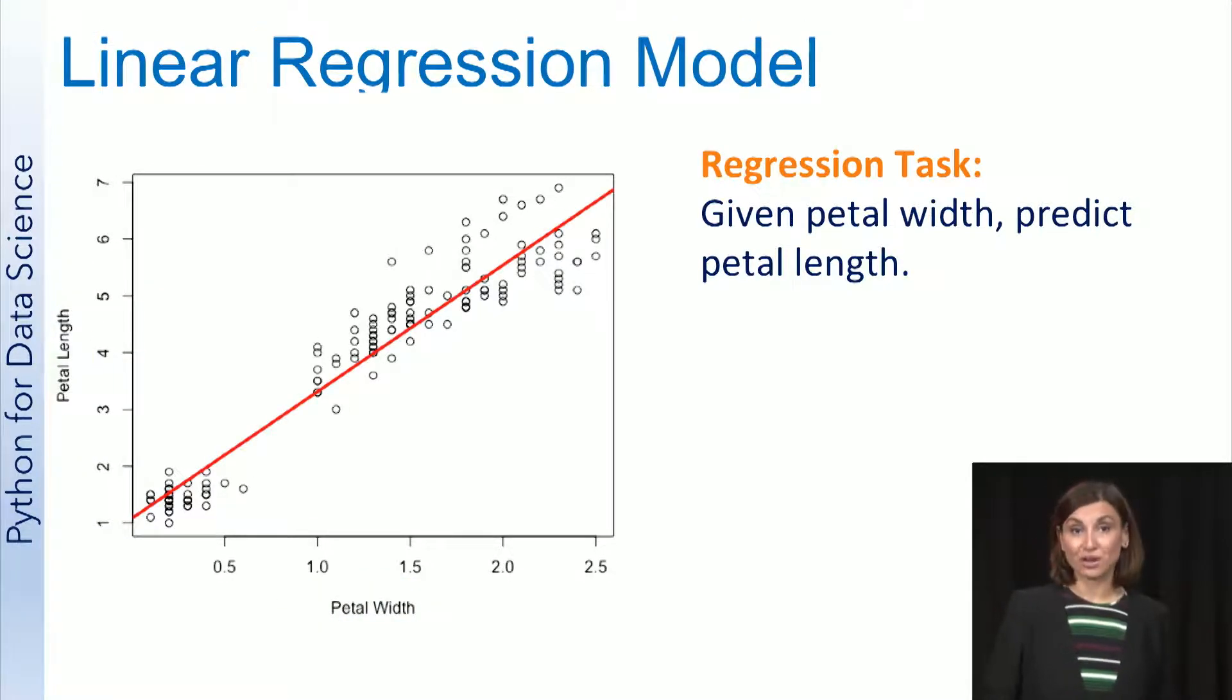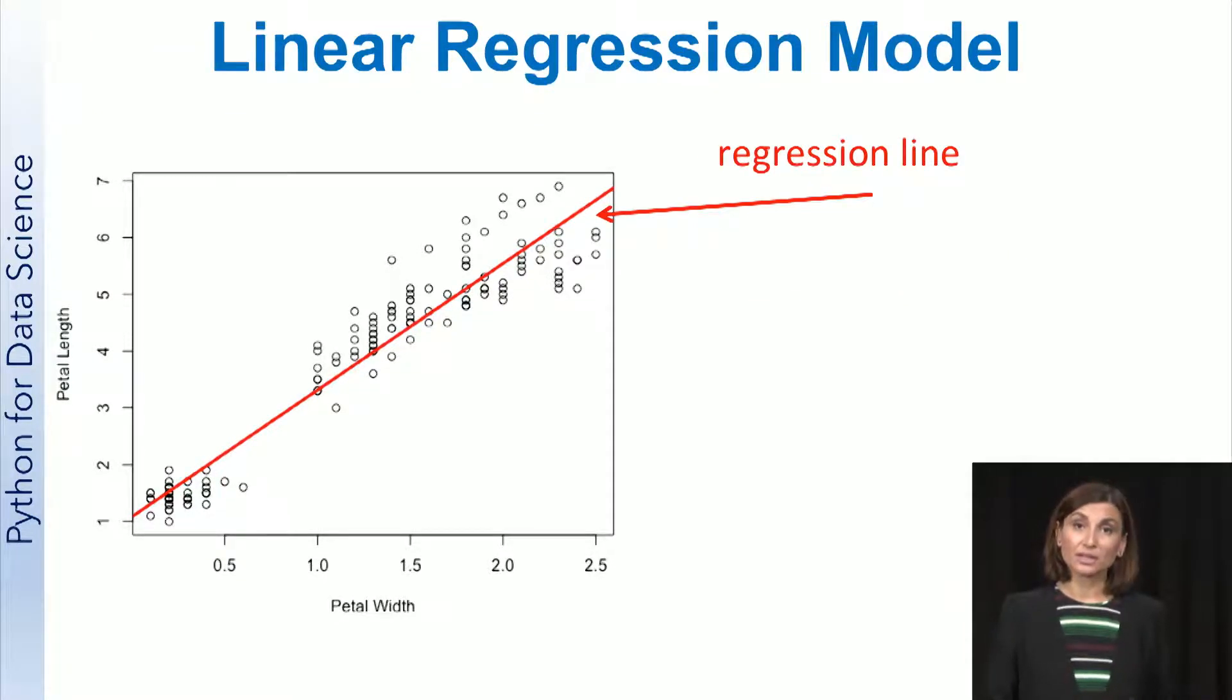We can build a linear regression model to capture this linear relationship between the input petal width and the output petal length. The linear relationship for these samples is shown as the red line on the plot. From this example, we see that linear regression works by finding the best fitting straight line through the samples. This is called the regression line.